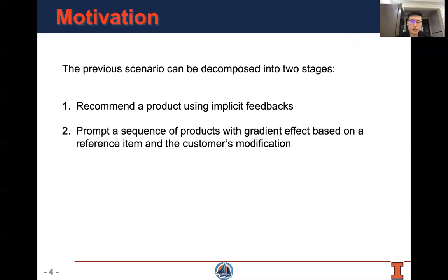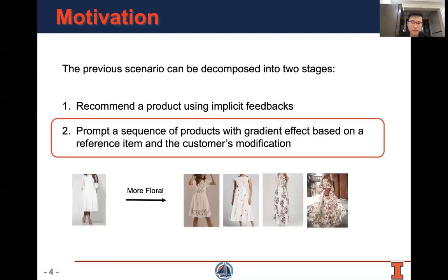The previous scenario can be decomposed into two stages. In the first stage, a product will be recommended using implicit feedbacks. In the second stage, the recommendation system will promote a sequence of products with gradient effect based on a reference item and the customer's modification. Because this is a new type of interaction, to make it clear and simple, in this work we only focus on the second stage.